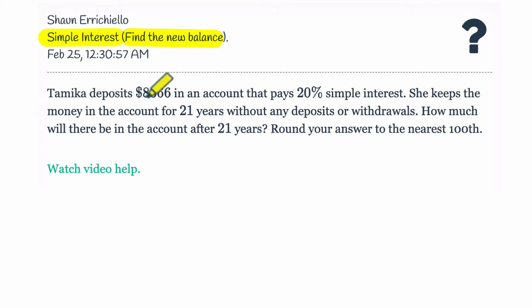In this problem, Tamika deposits $8,366 in an account. That is our principal, 8366, and it pays 20% simple interest. So that means our interest rate is 20 divided by 100. That's what percent means, and that's 0.2. She keeps the money in the account for 21 years without any deposits or withdrawals, and that's 21 for T.